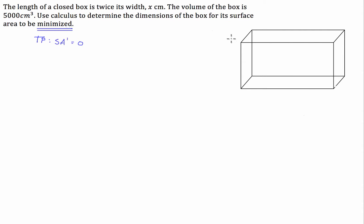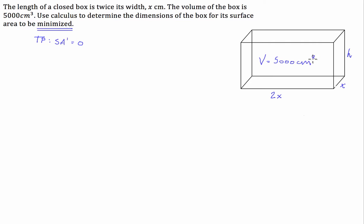So we've got here that its width is x, and its length is twice its width, so we can write down 2x. We aren't given a height variable so we're just going to write in h. We're also told that the volume of the box is 5,000 centimetres cubed.